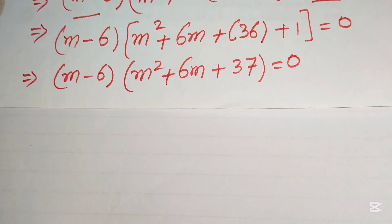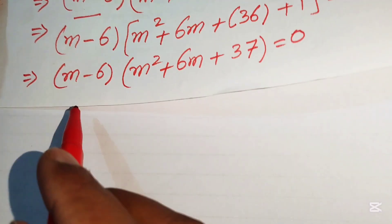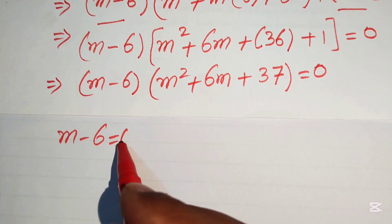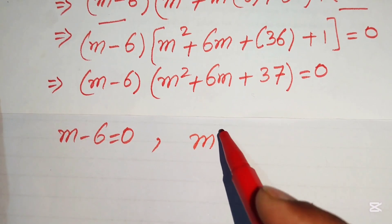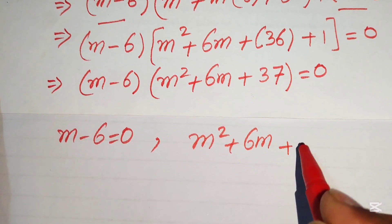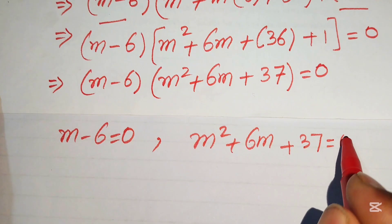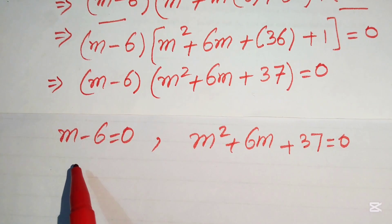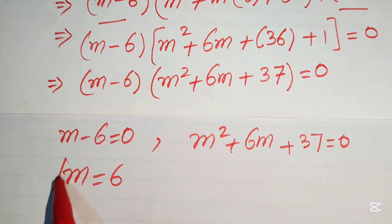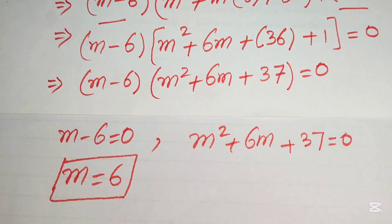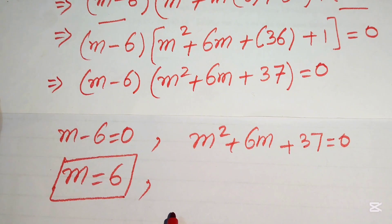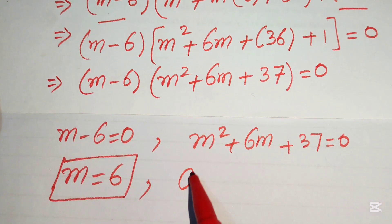We split this into two cases. Case 1: m − 6 = 0, which gives m = 6. This is the first real root of the equation. Case 2: m² + 6m + 37 = 0, a quadratic equation we need to solve for the remaining roots.